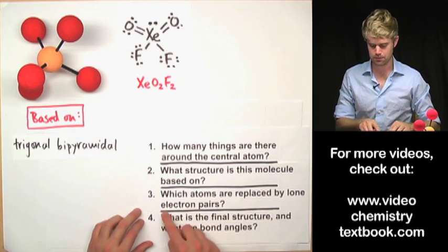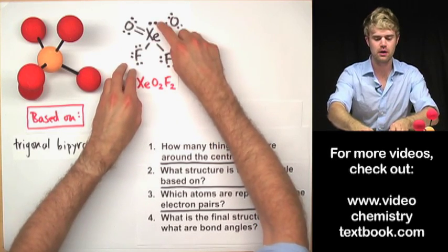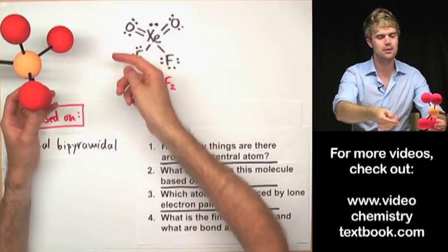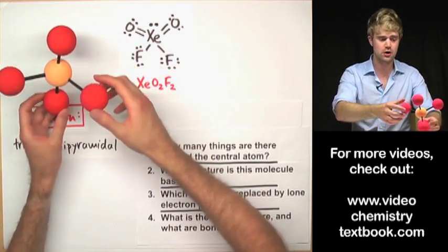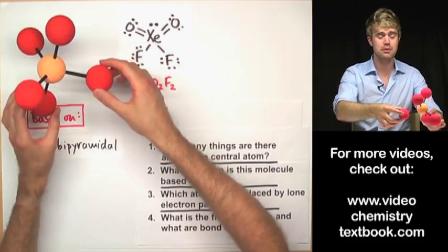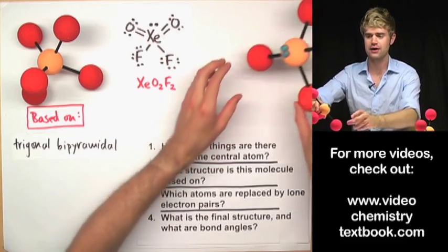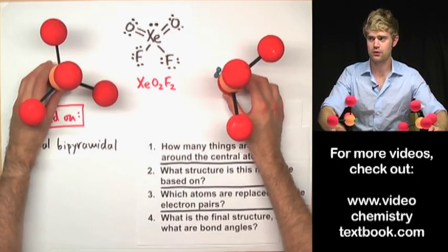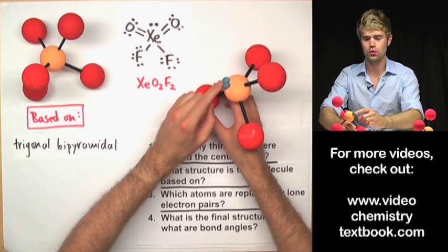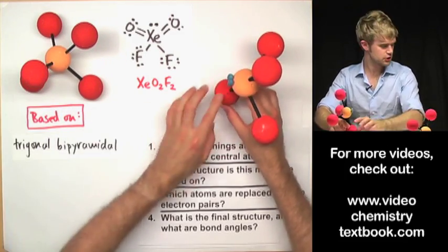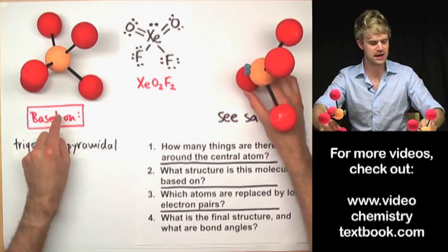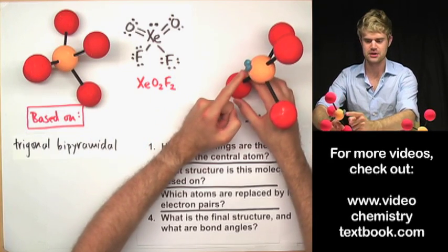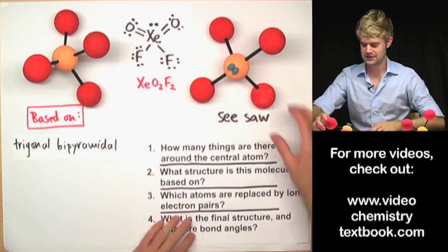Number three asks which atoms are replaced by lone electron pairs. In this molecule there are four atoms and one lone electron pair, which means one of the atoms in the trigonal bipyramidal molecule is going to be replaced by a lone electron pair. It's the equatorial atoms that get replaced by lone electron pairs first. So our final structure looks like this — one of the equatorial atoms has been replaced by a lone electron pair. This shape is called the seesaw shape, and it's based on and related to the trigonal bipyramidal shape.